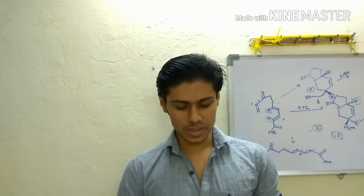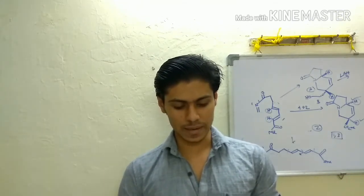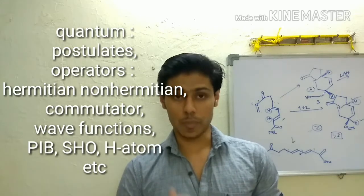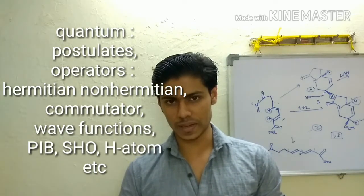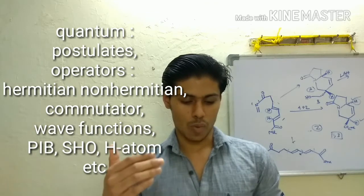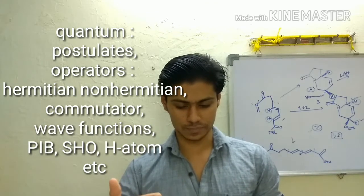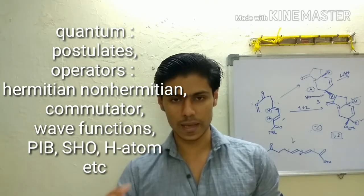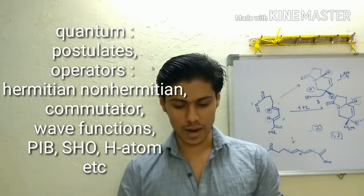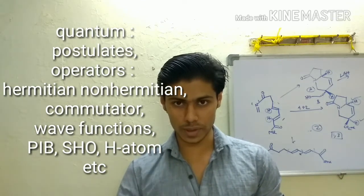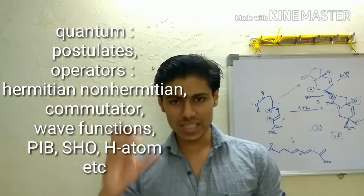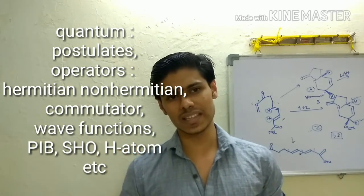the postulates, the postulates of quantum mechanics, the five postulates, then your commutator, wave functions and the wave functions which are acceptable. You have to test them. Then, Hermitian operator which are Hermitian operator which are not. These things you have to do because these are BSc level things.